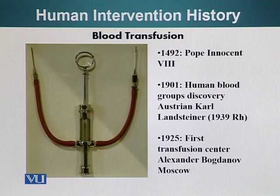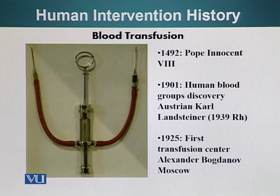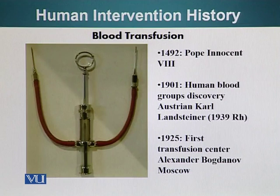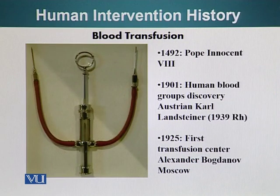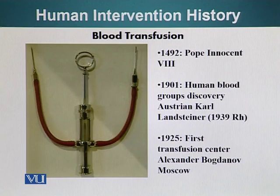In 1901, human blood groups were discovered by Austrian scientist Karl Landsteiner. Between 1492 and 1901, several attempts at blood transfusion were made — most unsuccessfully, because people did not know about blood grouping. Dr. Landsteiner received a Nobel Prize for his discovery of blood groups, and he also discovered the RH factor. In 1925, the first transfusion center was established by Alexander Bogdanov in Moscow, the first center storing blood for transfusion purposes.